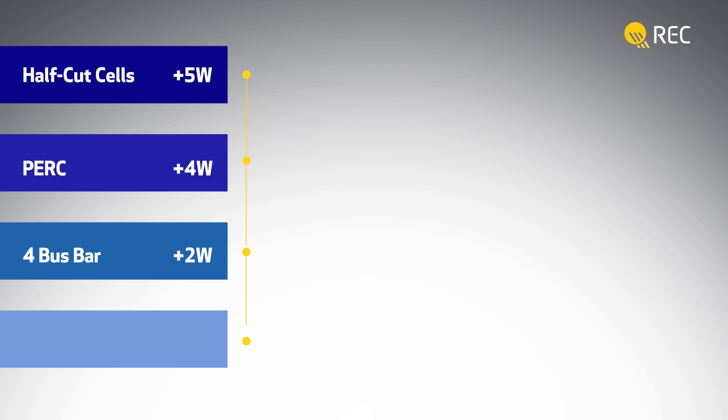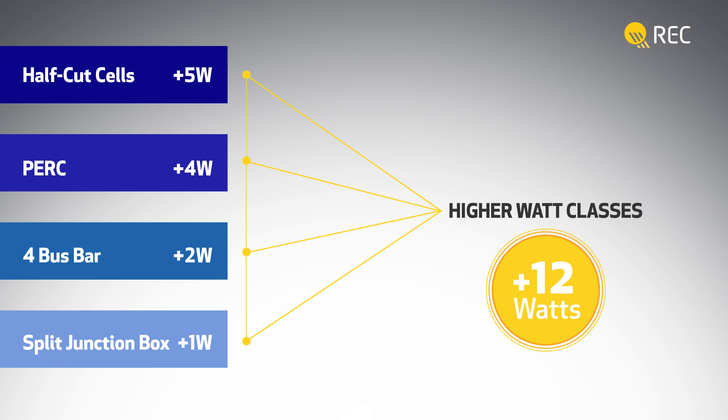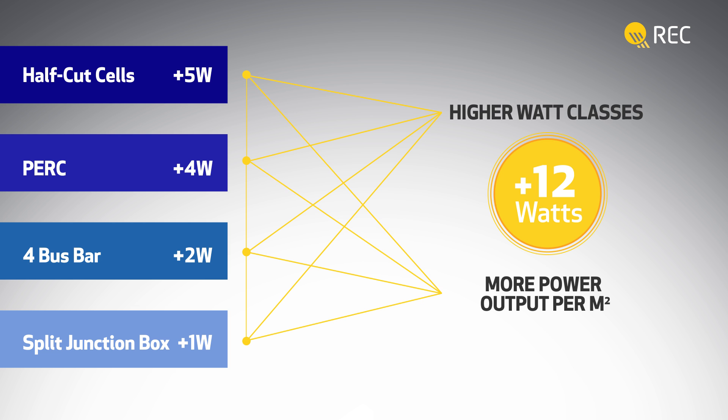Packing in all these advantages means the REC Twin Peaks is available in higher watt classes, giving more power output per square meter of solar panels installed, compared to standard solar panels.